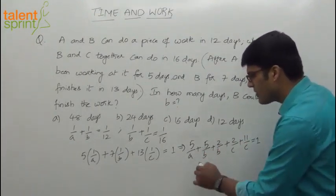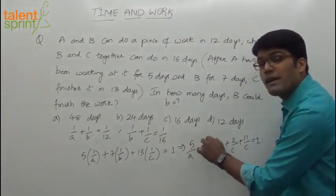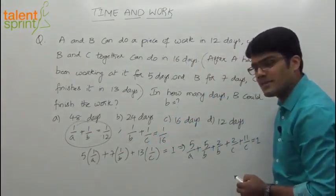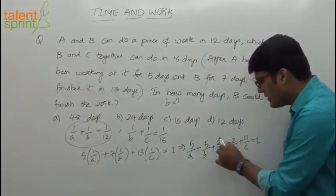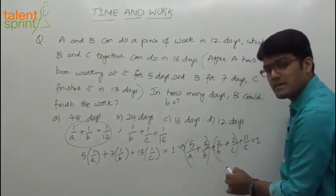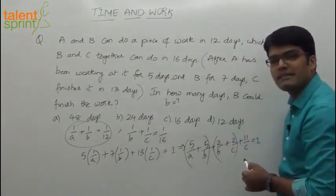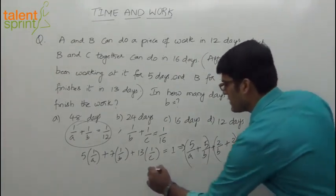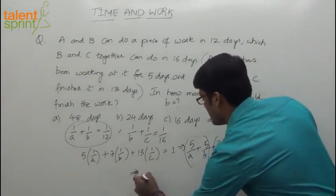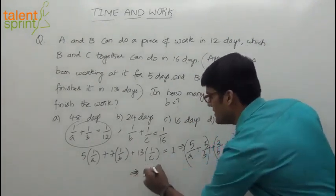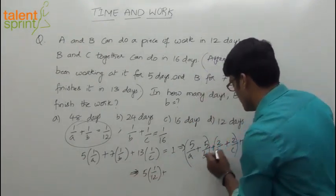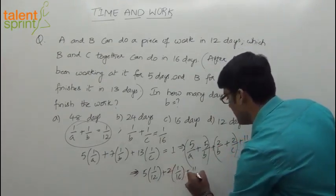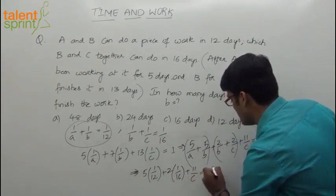What can we do? If I take 5 common, what are we left with? 1 by A plus 1 by B. And I know that 1 by A plus 1 by B is equal to 1 by 12. Likewise, if we take 2 common here, what do we get in these 2 terms? 1 by B plus 1 by C. What is 1 by B plus 1 by C? 1 by 16. So I can directly substitute that and I will get the value of C. So if we take 5 common, 1 by A plus 1 by B is 1 by 12 plus 2 common, so 1 by B plus 1 by C is 1 by 16 plus 11 by C equals 1.